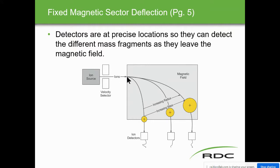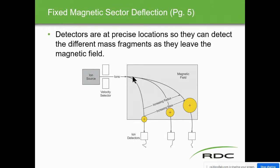Moving to the mass analyzer on page five: the mass analyzer sorts the ions according to mass and sends them to the detector. The three methods are: fixed magnetic sector deflection, variable magnetic sector deflection, and quadrupole mass filter. There is also a fourth method — time of flight. These are the methods used to sort ions, and we'll talk about each one.